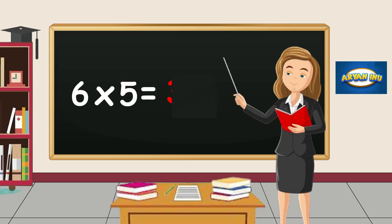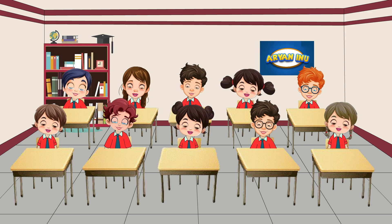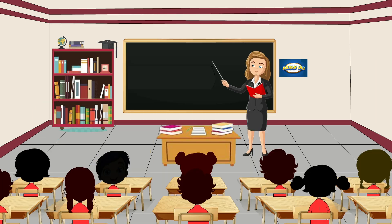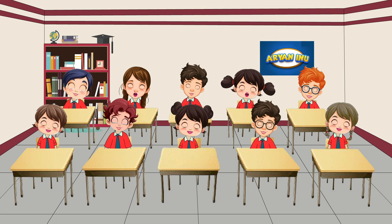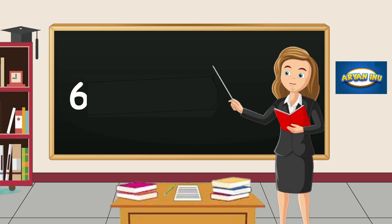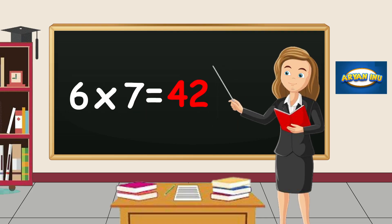Six fours are twenty-four. Six fives are thirty. Six sixes are thirty-six. Six sevens are forty-two.